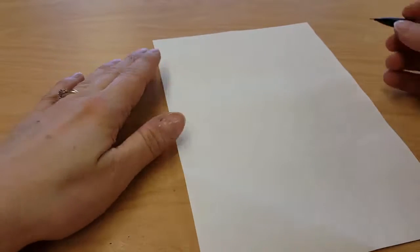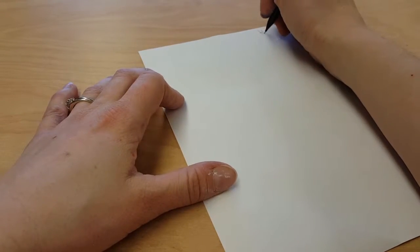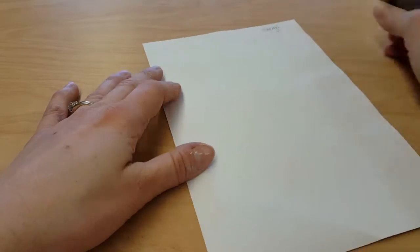Today we're going to make some paint blot bugs, but they won't look like a bug just yet—they'll look like a bug next week. You need a piece of paper. We're writing your name on the paper in a corner, please and thank you.